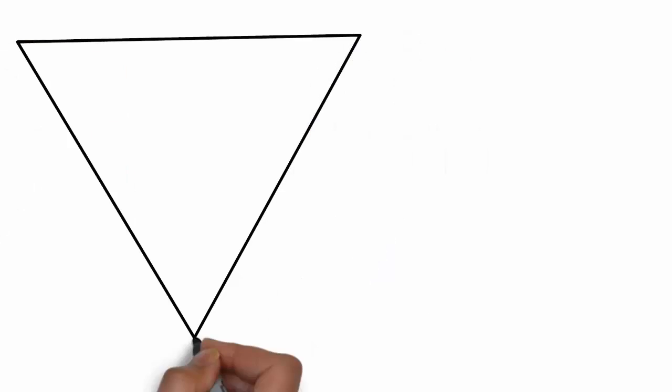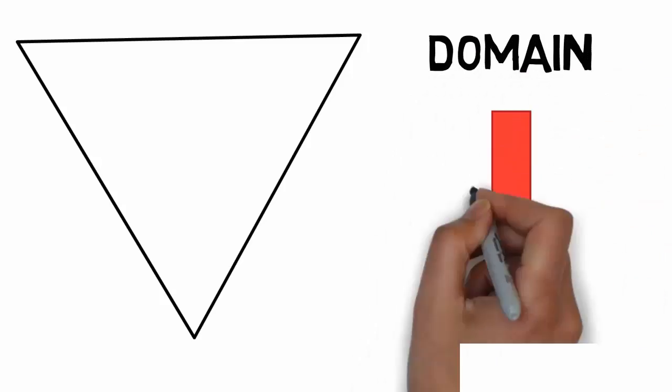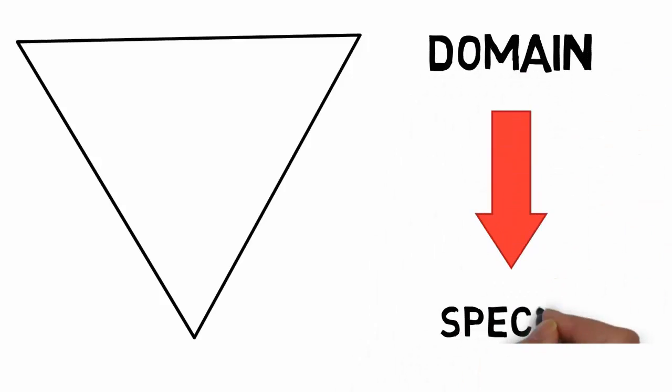Now we're going to be learning the different classifications from the most general to the most specific. So we're going from domain all the way down to species. The first image in our story is going to represent domain because that's the most general, then the second image is going to represent the next level, and so on until we reach species. So I hope you're ready because now we're going to get started.